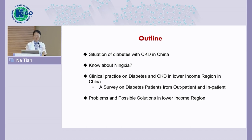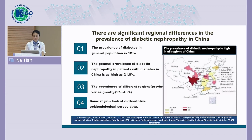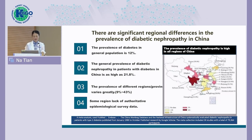First, I want to introduce the situation of diabetes with CKD in China. As we all know, China has the largest population in the world. The prevalence of diabetes in China was about 12%, a little bit higher than CKD prevalence in China, according to the 2022 survey across our country. The general prevalence of diabetic nephropathy in patients with diabetes in China is as high as 21%. However, the prevalence in different regions or provinces varies greatly, from 9% to 43%.